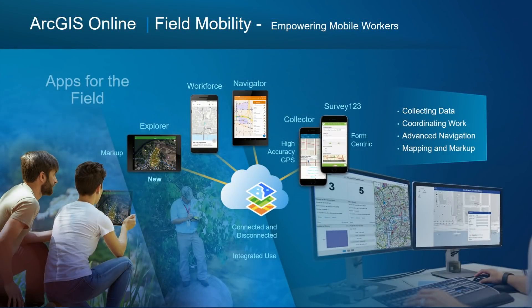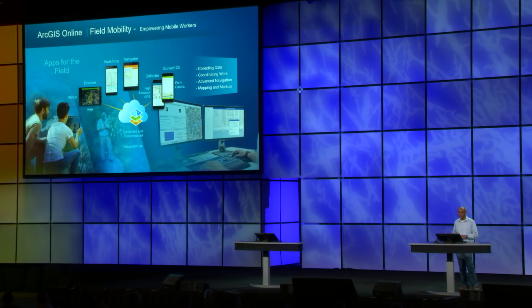The next key capability of ArcGIS Online is field mobility — for mobile workers collecting data in the field and for coordinators in the office helping them do that work. It includes a full suite of apps for collecting data with support for high precision GPS, form-centric experiences for collecting data, and advanced navigation that works offline and can take people where they need to go using routes computed in the back office — multi-vehicle routes visiting multiple stops. All of that's available through Navigator. And the ability to take maps into the field and mark them up, together with back office apps for coordinating this work.